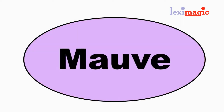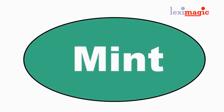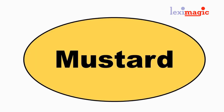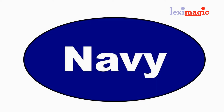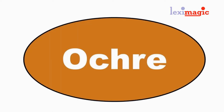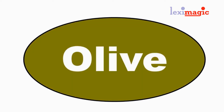Mauve: a pale purple or violet color. Mint: a green similar to the color of mint leaves. Mustard: a dark yellow color like the color of mustard paste. Navy: a dark blue color. Ochre: a dark yellowish orange color.